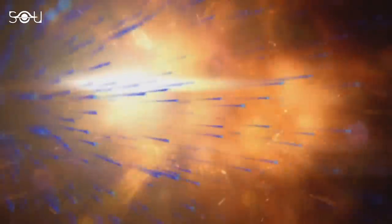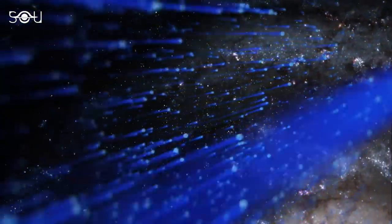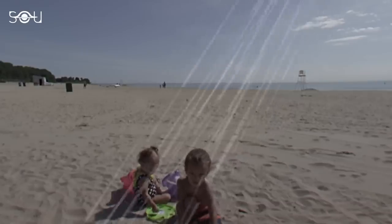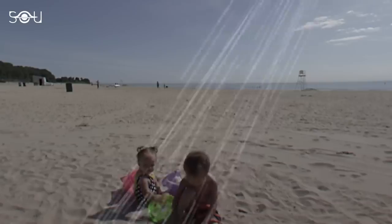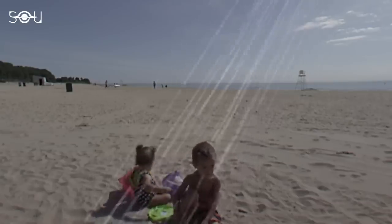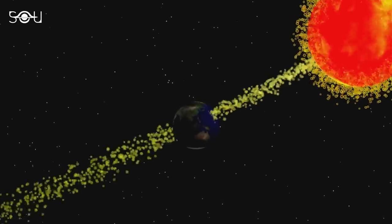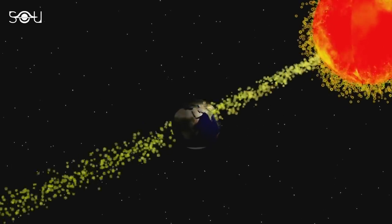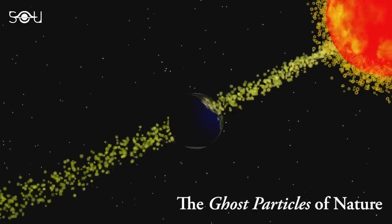Traveling at nearly the speed of light, they glide straight through stars, planets, and even our bodies, with approximately 100 billion neutrinos passing through each square centimeter of your body every second. This means trillions of neutrinos are passing right through us each second, and we can't even notice it. This eerie ability has earned them the apt nickname, ghost particles.